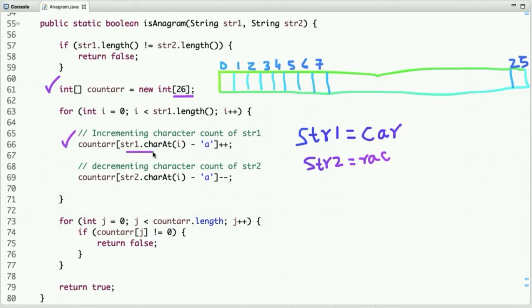What I'm doing is I'm using ASCII code. We know the ASCII code of 'a' is 97. Similarly, the ASCII code of 'b' is 98, and it goes up to 'z', which has an ASCII code of 122. To accommodate them in indices 0 to 25, we need to subtract with the ASCII code of 'a'.